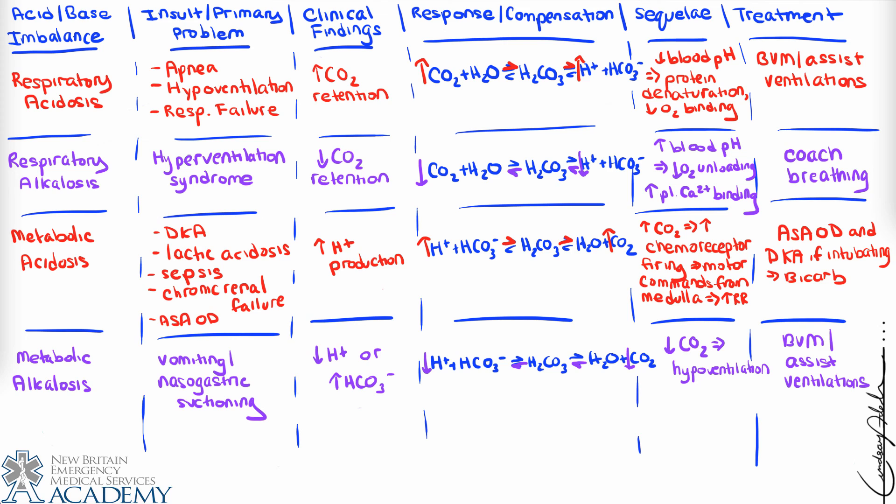That wraps up our look at acid-base balance problems we might encounter in the pre-hospital environment. In a clinical setting there are lab values that help correlate with these problems, but since our patients don't come with lab values, we have to assist the patient and keep in mind that these presentations might be either the primary problem or a major contributor to the patient's symptoms. The goal is a more well-rounded understanding of how patients deal with acid-base problems.